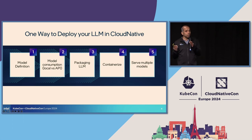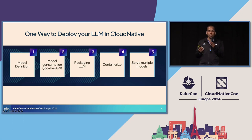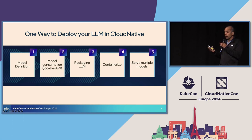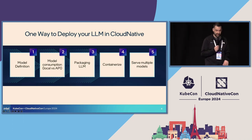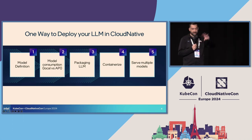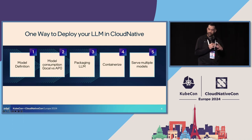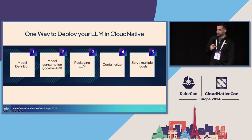There are many ways customers are deploying LLMs in cloud native. We're going to talk about one specific way. We're defining five main steps: the first is the model definition, the second is the API, the third is the packaging, then you containerize it, and you use Kubernetes. We will go deep into all of them.